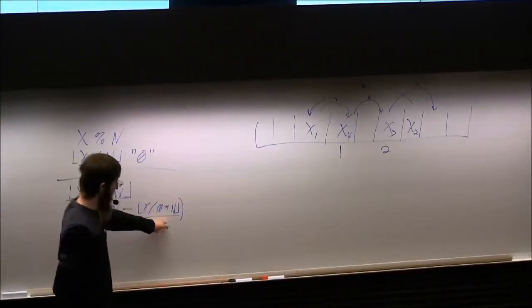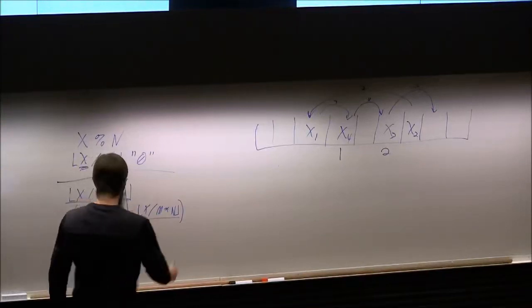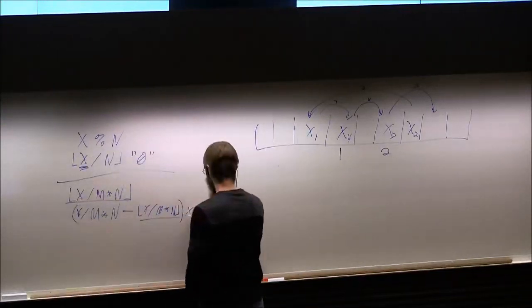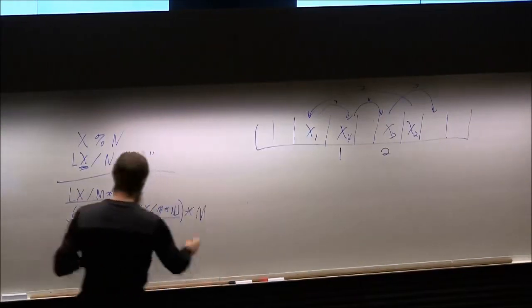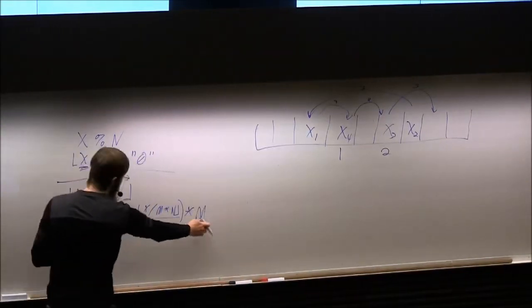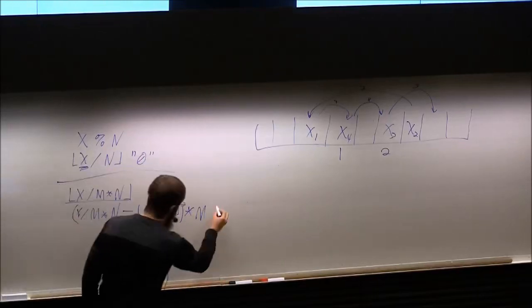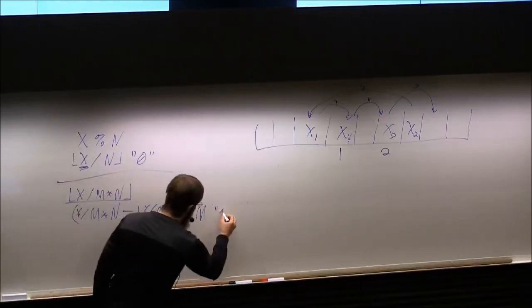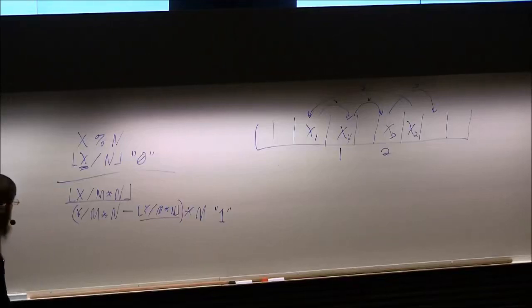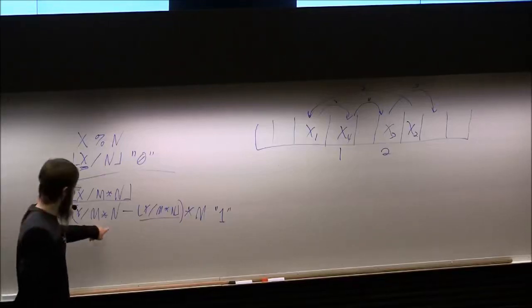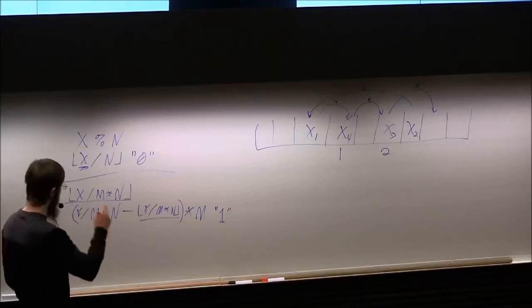We're getting the fractional part — basically getting rid of the integer part, then multiplying by N. This is what we would actually store in one of those buckets, plus a bit of one. From this, we could rebuild x using the stored number, the fact that it's the second hash function, and the bucket position.